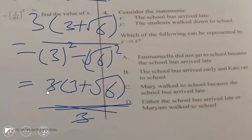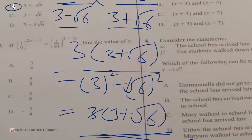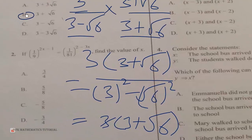This 3 cancels that 3, so we are left with 3 plus root 6. The required answer is B.